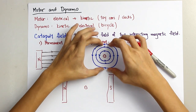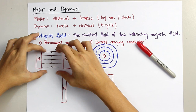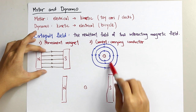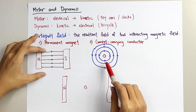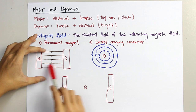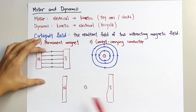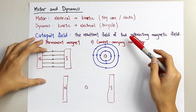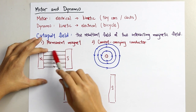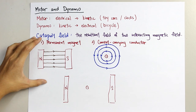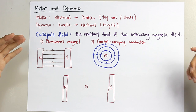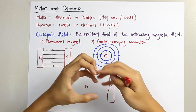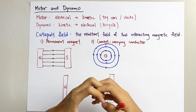If I put these together, you can see that in this part the direction of the magnetic field from the wire is the same as the magnetic field from the permanent magnet. And as we know, when two forces are opposing each other, the resultant force will be lesser.